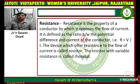R is equal to V upon I. The device which offers resistance to the flow of current is called a resistor. The resistor with variable resistance is called a rheostat.